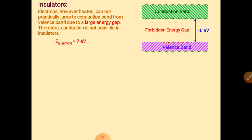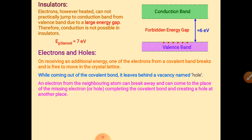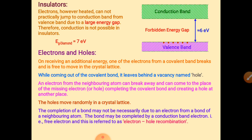Electrons have negative charge and holes, due to deficiency of electrons, have positive charge — it is simply a deficiency of electrons. An electron from a neighboring atom can break away and come to the place of a missing electron, completing the covalent bond and creating a hole at another place. When electrons move from the valence band to the conduction band, the conduction band carries negative charge while the valence band carries positive charge due to the holes.